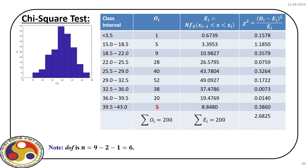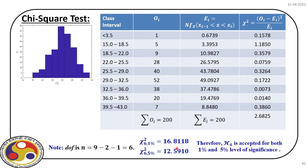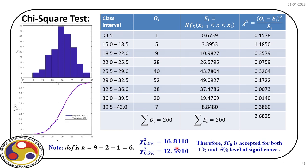In this case, we have nine different classes and estimate two parameters, because our null hypothesis says it is a normal distribution with two parameters (mean and sigma). So the degrees of freedom is 9 - 2 - 1 = 6. From the chi-square table, the critical value for 1% is 16.8118 and for 5% is 12.5910. The estimated chi-square value of 2.6825 is less than both critical values, so the null hypothesis is accepted.